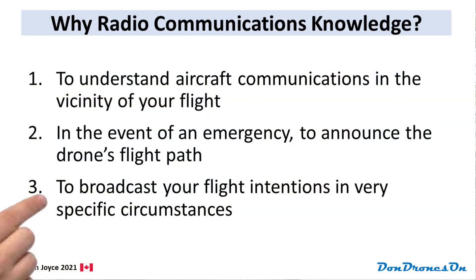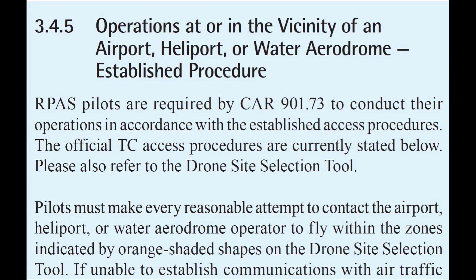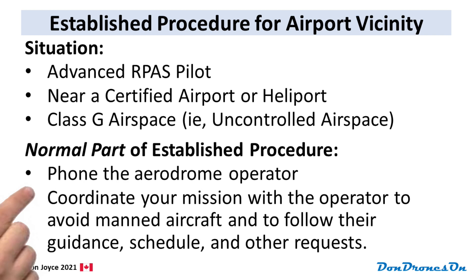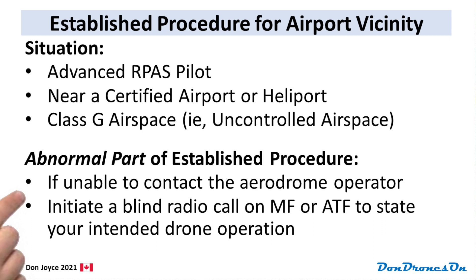The third reason for a drone pilot to use an airband radio is to comply with the established procedure published in the AIM document regarding flying near certified aerodromes outside of controlled airspace. Obviously, this applies only to advanced pilots, since certified aerodromes are no-fly zones for basic pilots to begin with. Normally, if you're planning a flight near a certified airport outside a control zone, you simply phone the airport operator and coordinate your flight with them. If you're unable to connect with the airport operator, however, you are expected to initiate what is called a blind radio call before launching your flight. We'll discuss the protocol for such a communication — the exact words to use — in the next video.